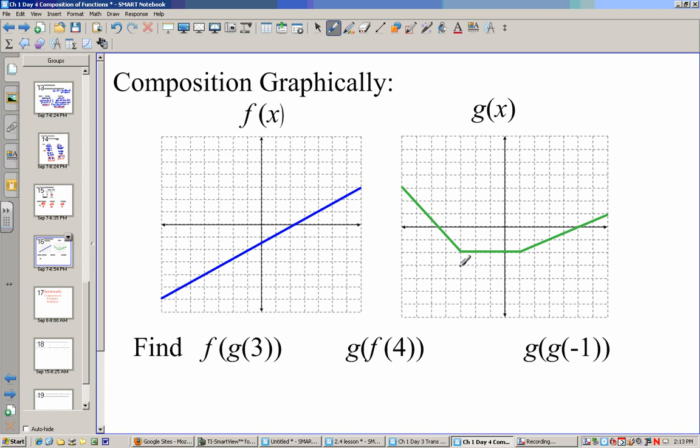Now if we do this graphically, g(3), 1, 2, 3 will give us a y value of negative 1. So now if I type in f(-1), if x is negative 1, my y value is negative 2. If I have g(f(4)), f(4), 1, 2, 3, 4, that value is 1. g(1) will give us a value of negative 2.